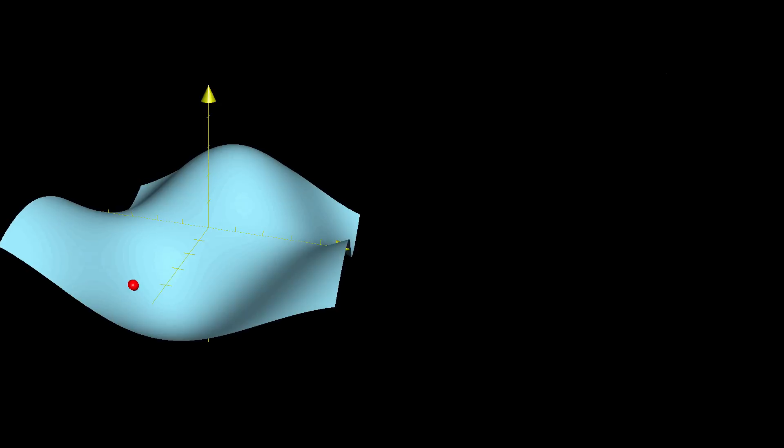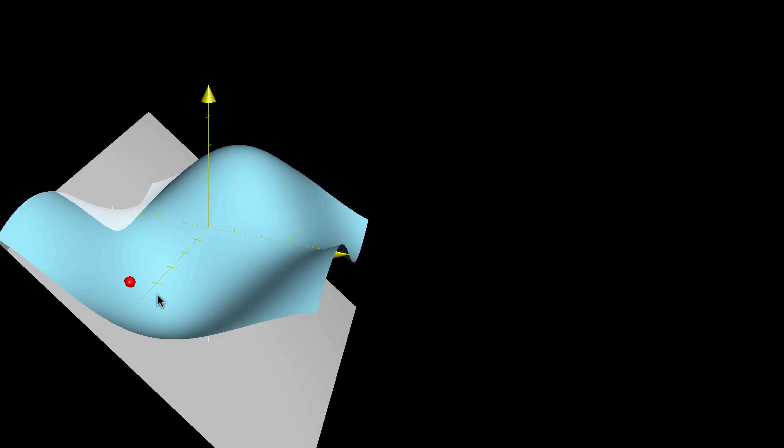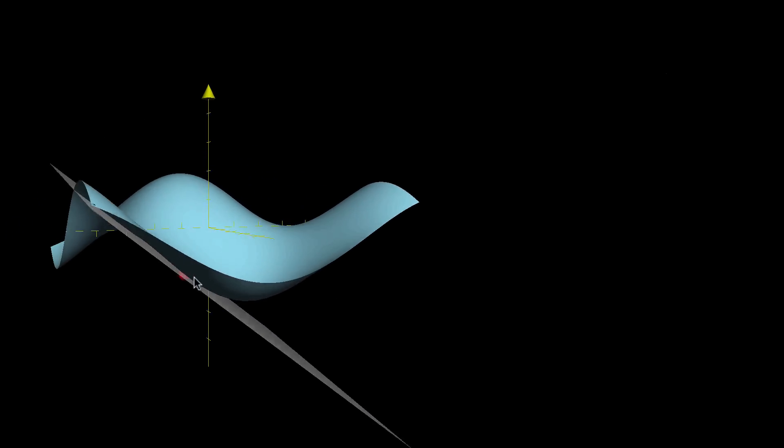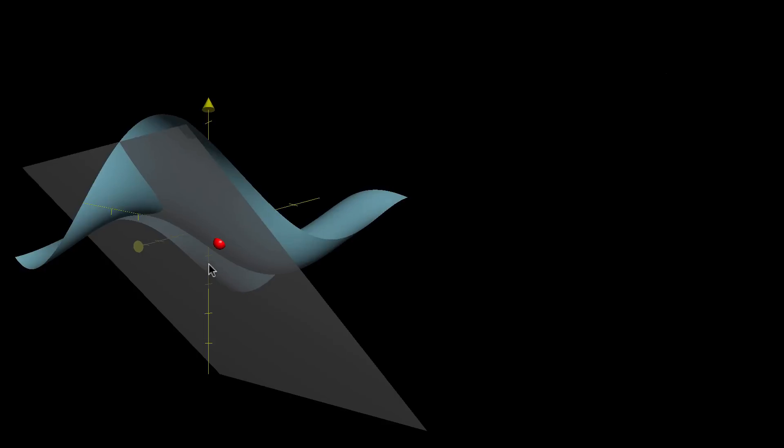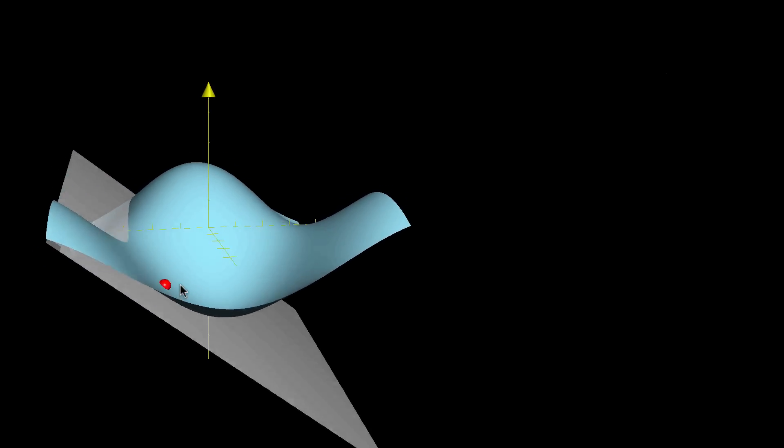But if you have some sort of point and you want to approximate the function near there, you can have another function whose graph is just a flat plane and specifically a plane which is tangent to your original graph at that point. And that's kind of visually how you think about the local linearization.